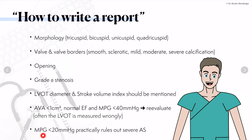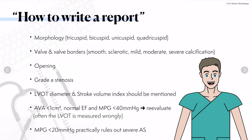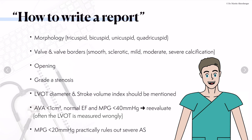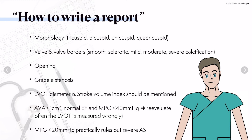If you have a mean pressure gradient below 20 mmHg, that practically rules out a severe aortic stenosis. So if the mean pressure gradient is below 20 mmHg and measurements are still off, go back again to measuring the LVOT. Very often the LVOT is truly the problem.